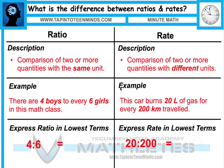Whereas a rate, you're comparing two or more quantities with different units. An example would be a car burning 20 liters of gas for every 200 kilometers traveled — two different units.